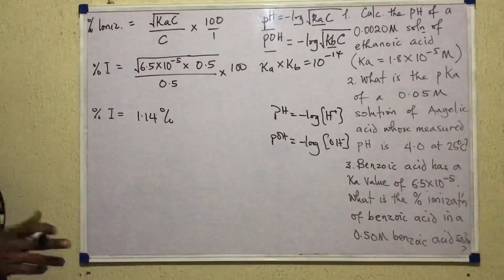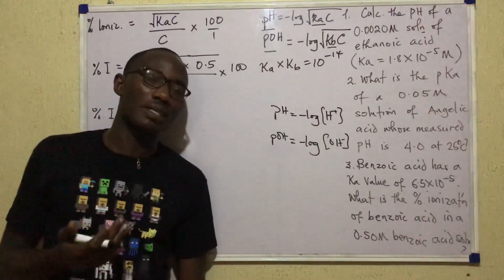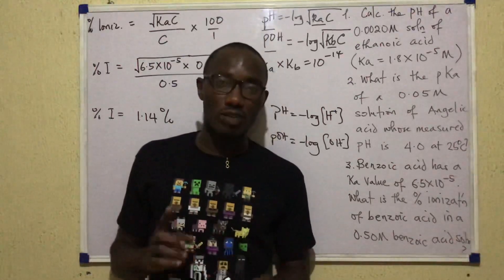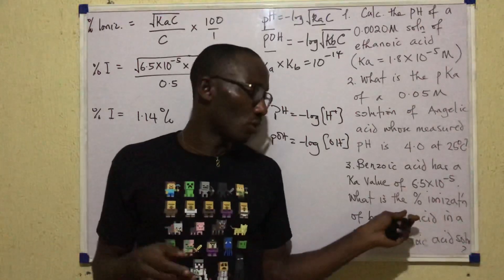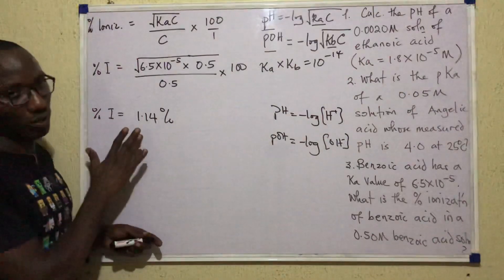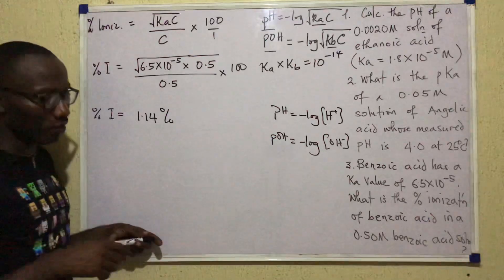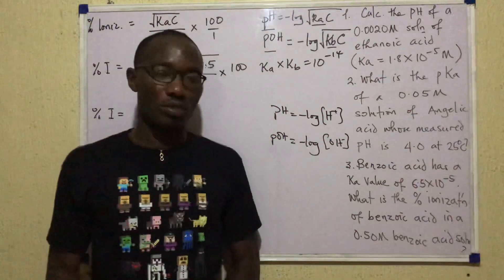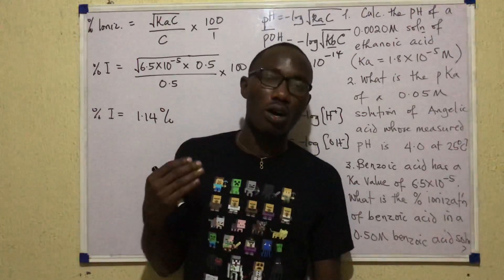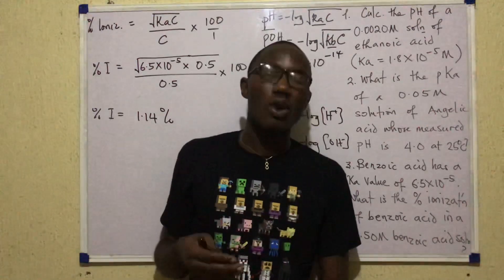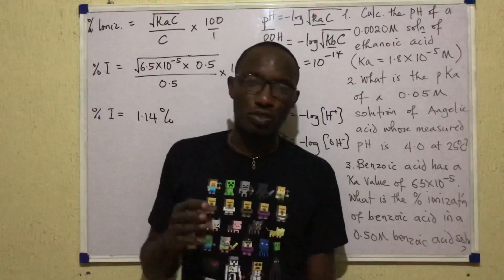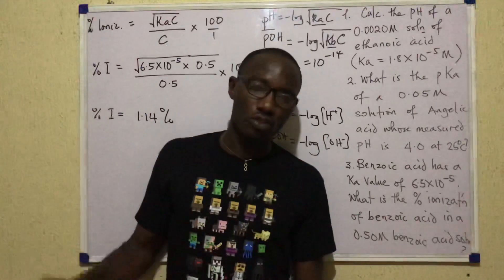We cannot calculate percentage ionization this way for strong acids. For strong acids like HCl and H₂SO₄, it is assumed they are 100% ionized. For weak acids, the percentage ionization is usually very small — here only 1.14% ionized. Once you see a question on pH of a weak solution or percentage ionization, these formulas work for most common cases. Issues may arise only with weak dibasic or weak polyprotic acids.